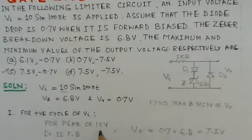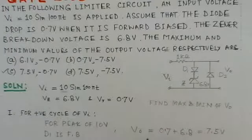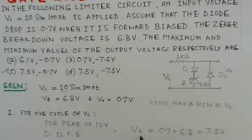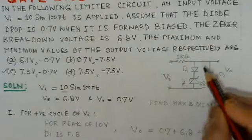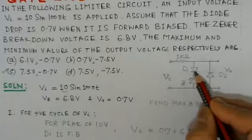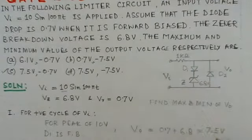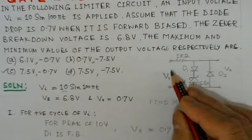So we can directly presume that suppose the peak of 10 volts is applied. If 10 volts is applied, then the output, when the peak 10 volts is applied, there is a drop of 0.7 volts here and a drop of 6.8 volts here.